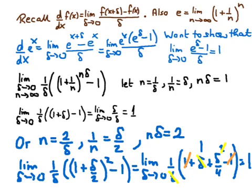So the limit as delta approaches 0 of that factor is 1, and therefore the derivative of e to the x is e to the x multiplied by 1 — that is, the derivative of e to the x is e to the x. That is why this special number e occurs in so many applications of mathematics across a vast number of fields.